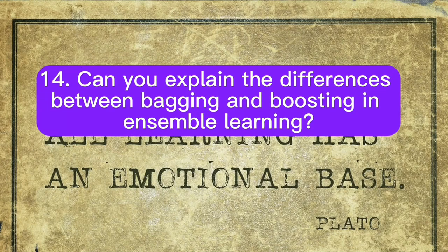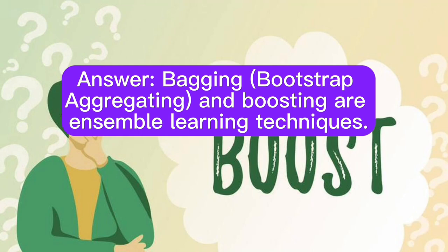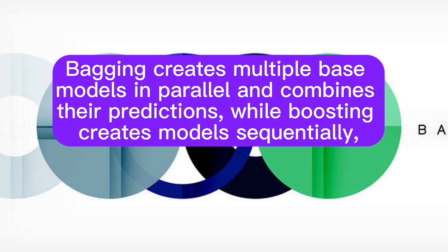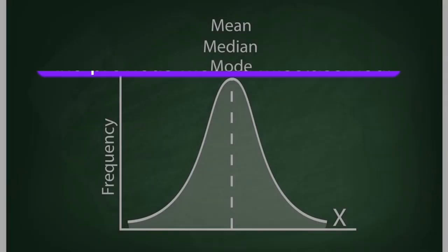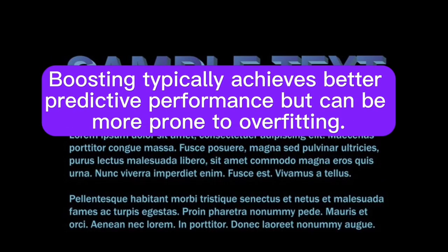Question 14: Can you explain the differences between bagging and boosting in ensemble learning? Answer: Bagging (bootstrap aggregating) and boosting are ensemble learning techniques. Bagging creates multiple base models in parallel and combines their predictions, while boosting creates models sequentially, giving more weight to instances that the previous models misclassified. Boosting typically achieves better predictive performance but can be more prone to overfitting.